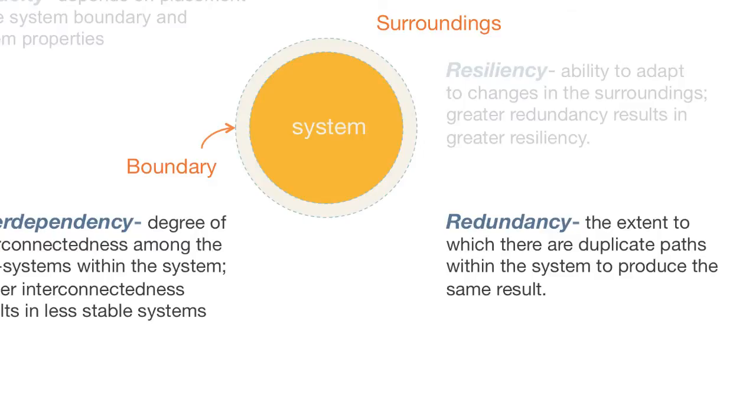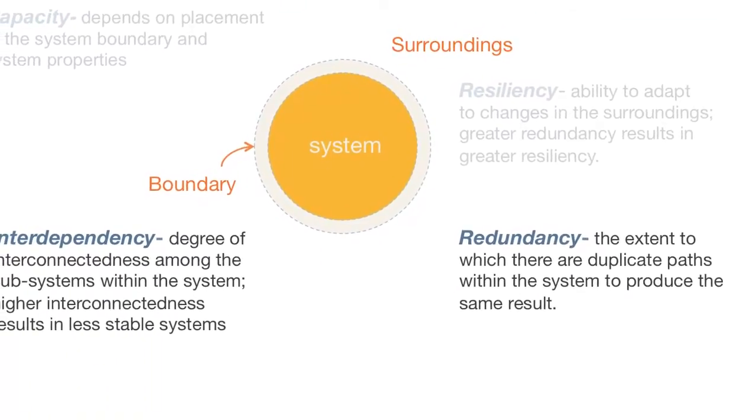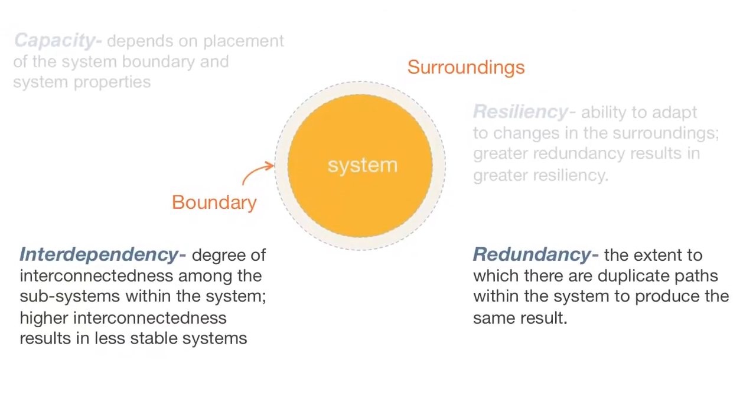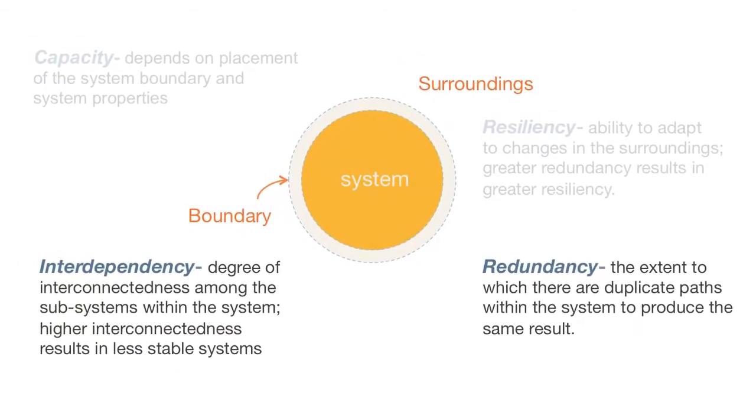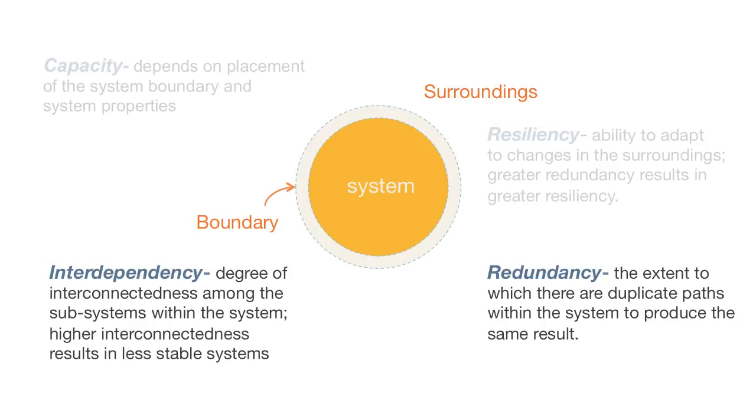Redundancy is the extent to which there are duplicate paths within the system to produce the same results. Compact disks oftentimes have four redundant tracks of the same information, so that if there's a speck of dust on one of the bits, there are three others which can provide the same information. This is an example of redundancy.